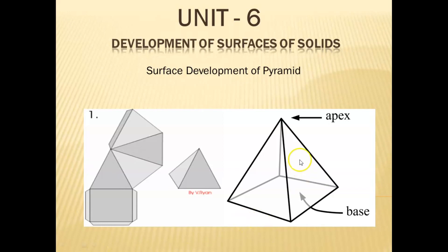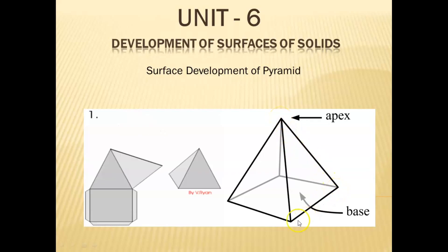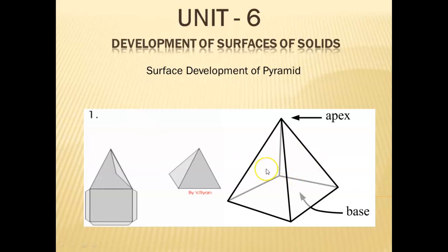In this case, you can see a square pyramid which has an apex and all slant edges starting from the apex connected with the base. Now the base here is a square, hence it is called a square pyramid. You can see all lateral surfaces are triangles, or you can say isosceles triangles.